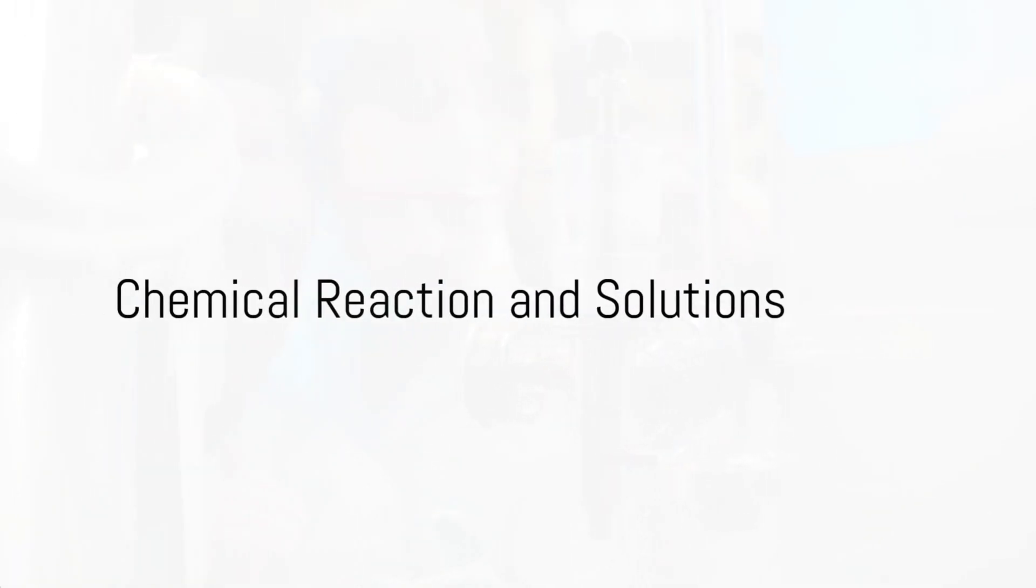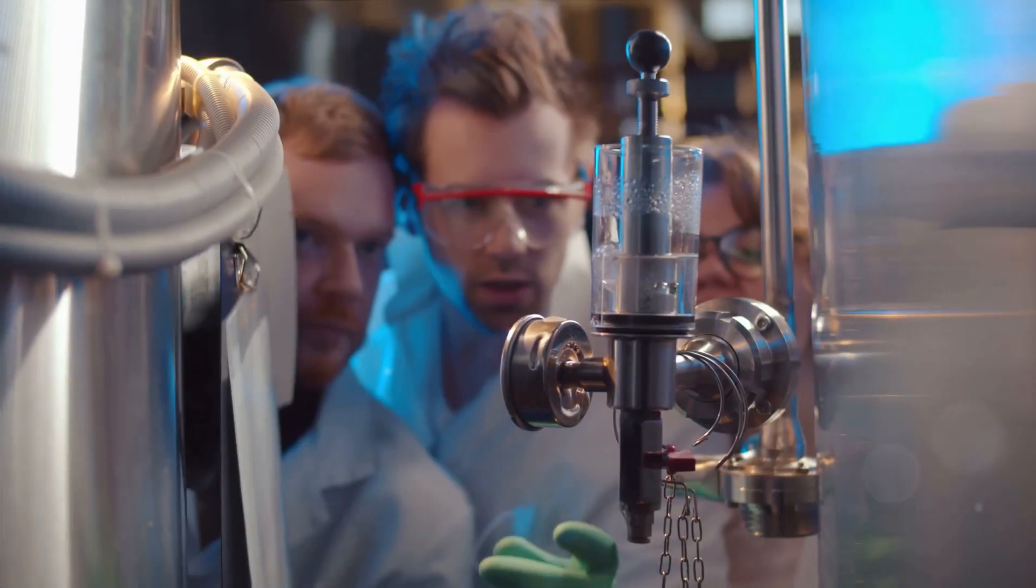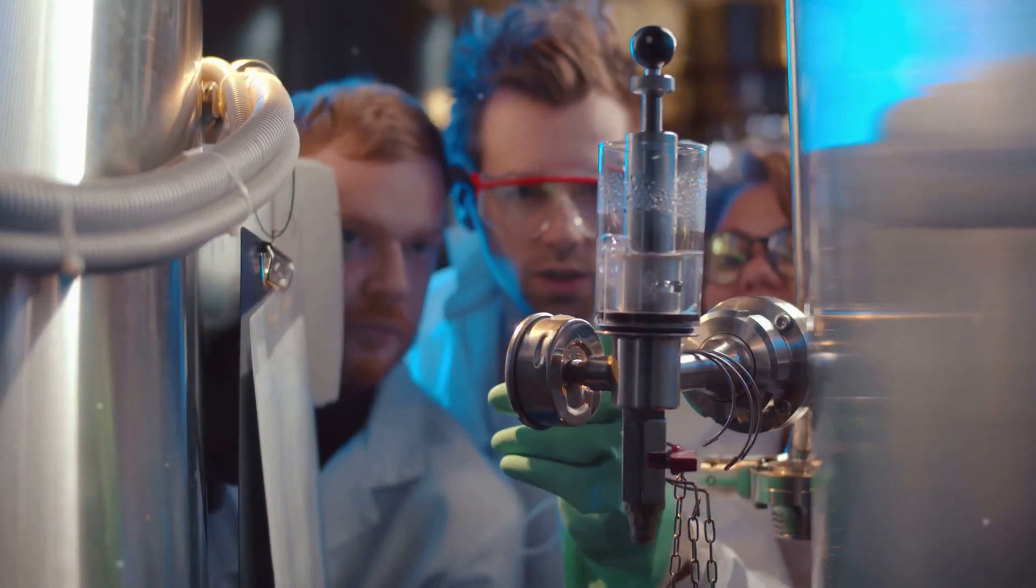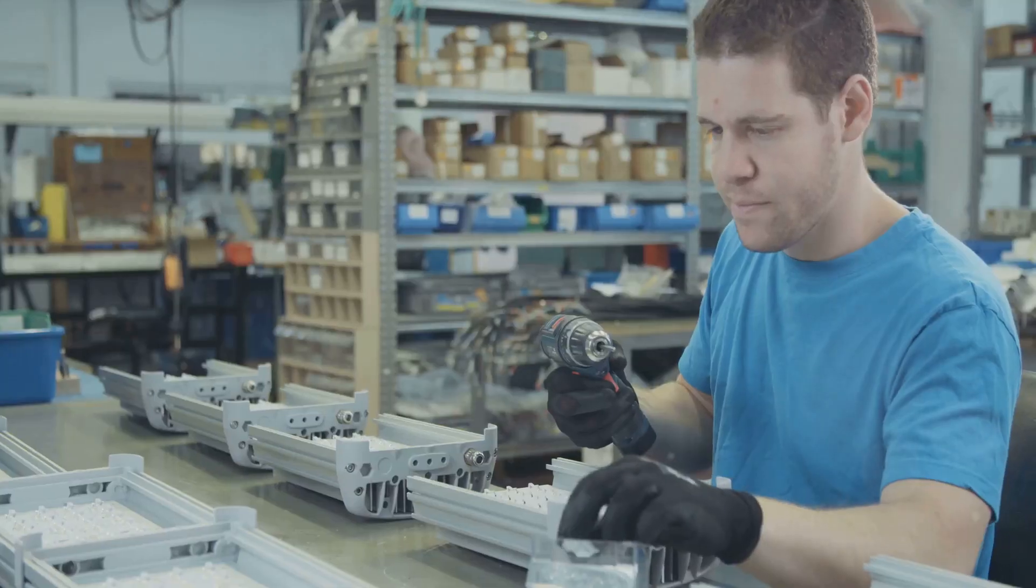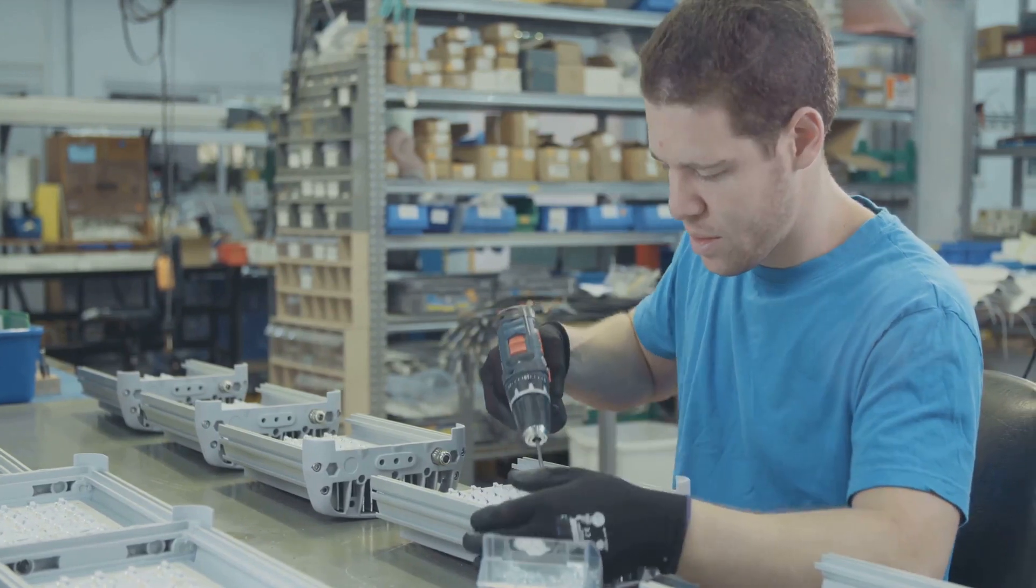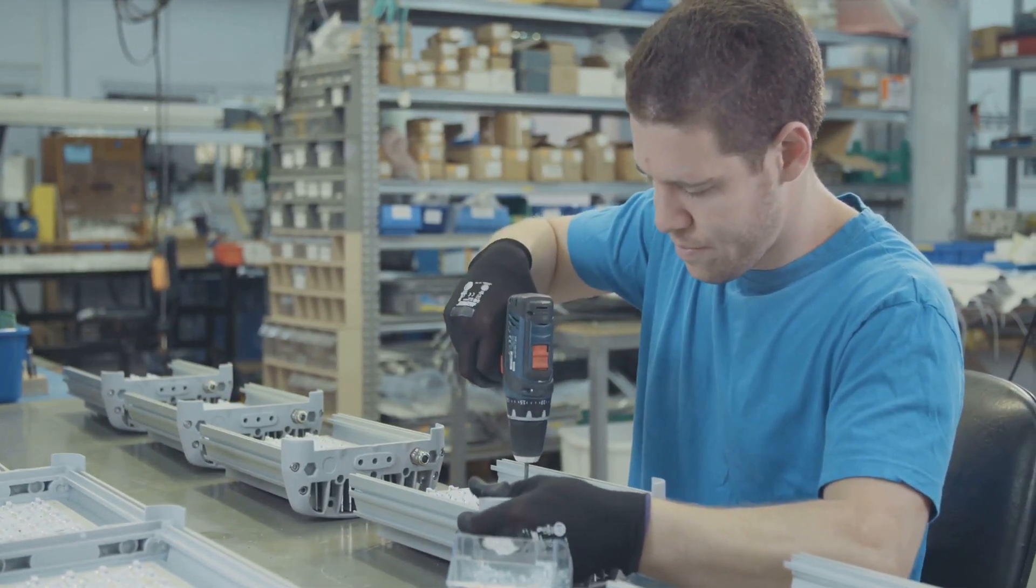Glow sticks are the result of a chemical reaction known as chemiluminescence, which produces light when two chemical compounds interact. This process is carefully orchestrated in a factory setting to produce the glow sticks we know and love.